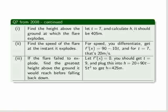If the flare failed to explode, find the greatest height above the ground that it would reach before falling back down. Well, that's a maximum. You have to set the derivative to 0. You should find that t equals 9 in that case, and then you get h equals 425 metres.